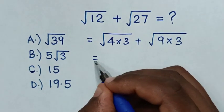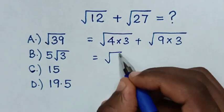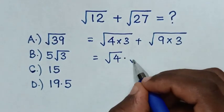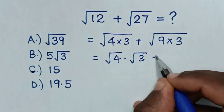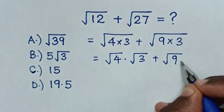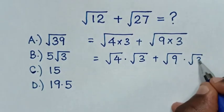Then this will be equal to square root of 4 times square root of 3, then plus square root of 9 times square root of 3.